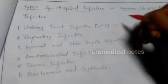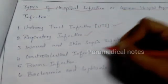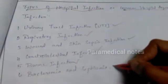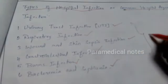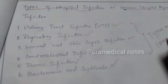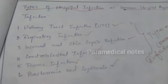The fifth main point is types of hospital infection. The six common types are: urinary tract infection, respiratory infection, wound and skin infections, gastrointestinal infection, burns infection, and bacteremia and septicemia. These six infections are very important. If you want, you can explain each in the exam.